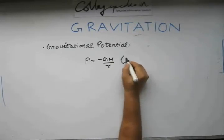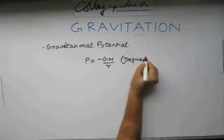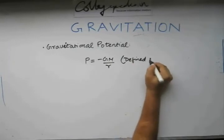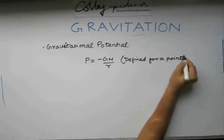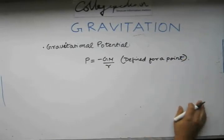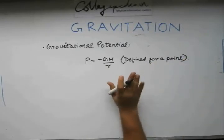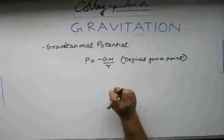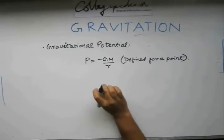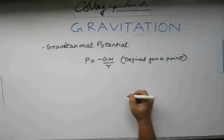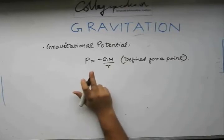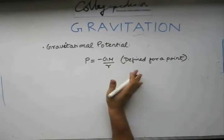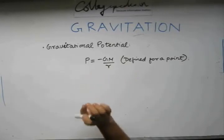This is defined for a point, unlike the gravitational potential energy. This is very similar to what we have in electricity — in electricity we have the voltage potential, where at any point on a conductor there is some potential. In the same way, in a gravitational field we have a gravitational potential.